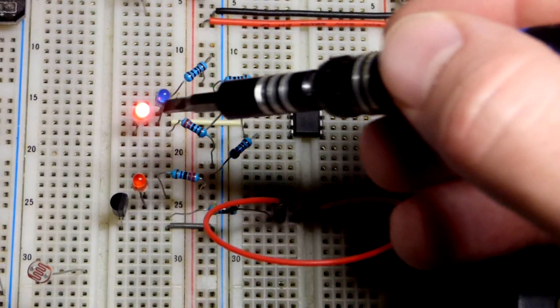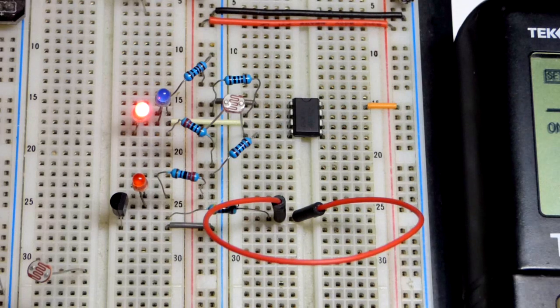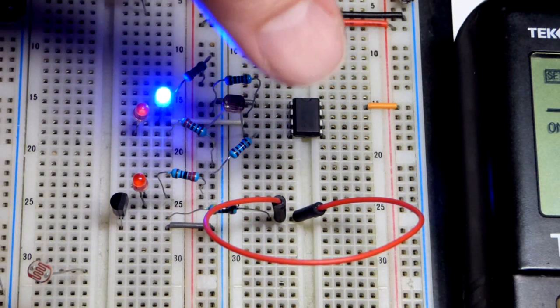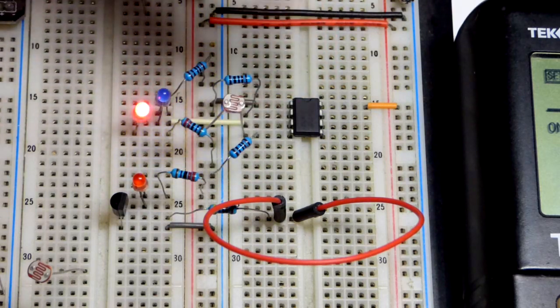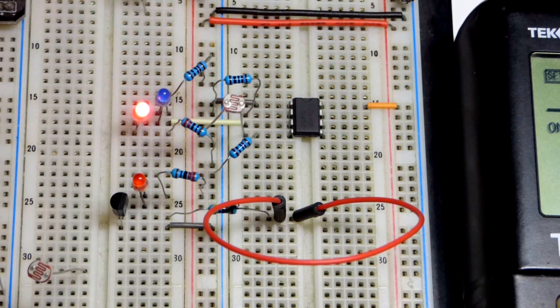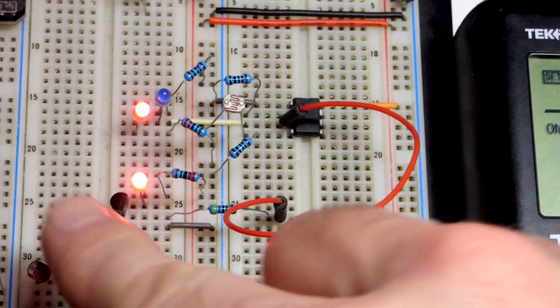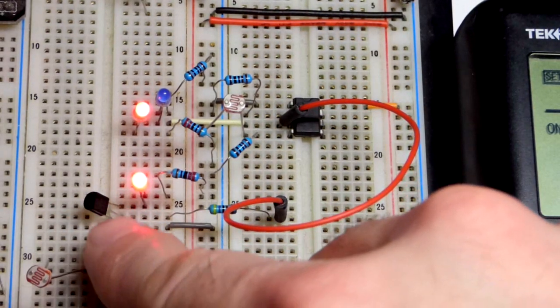You only see the red LED lit up at the output, and when I shaded the light dependent resistor, the blue LED came on. This works fine even at 4.2 volts. Now we're going to connect the NPN bipolar junction transistor - this is a 2N3904.